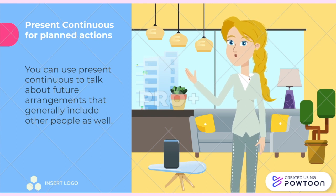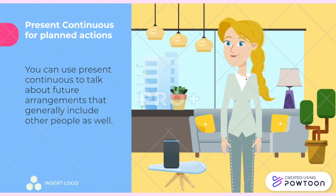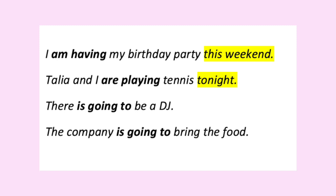Going to is another grammar structure used to talk about future plans and arrangements that you have already made. Let's take a look at some examples. I am having my birthday party this weekend — this is a party and other people will participate in it as well; this party was planned before. Talia and I are playing tennis tonight — similarly, this plan is arranged with another person beforehand. And at the party, there is going to be a DJ — Rachel planned to call the DJ before the party; the DJ is part of the birthday party plan. The company is going to bring the food — Rachel also arranged the food company; the company's plan is to bring the food. As you see, we use present continuous tense and going to to talk about planned or personally scheduled events.